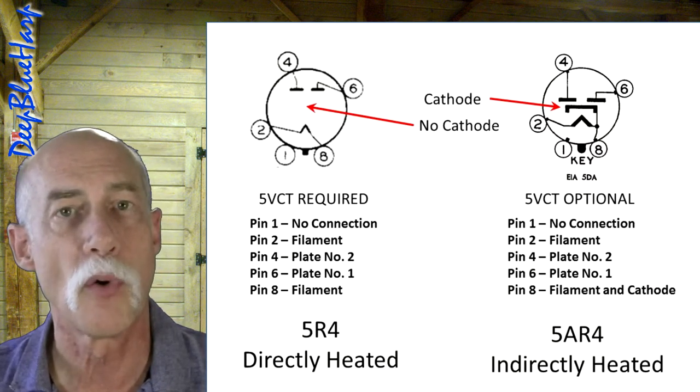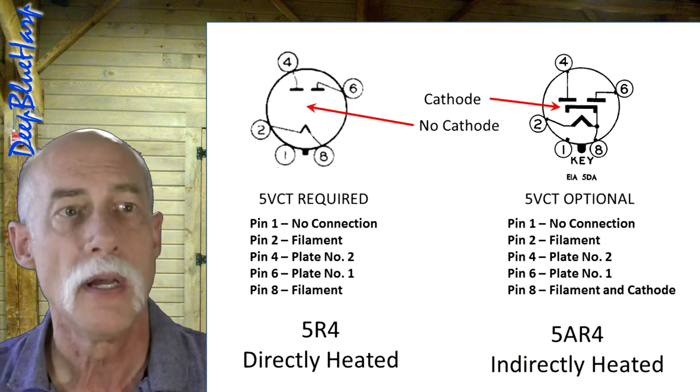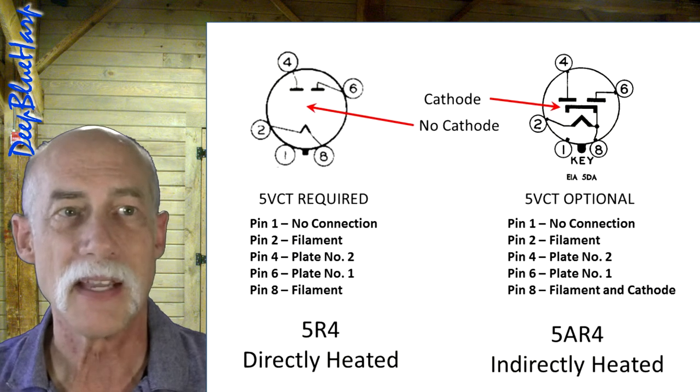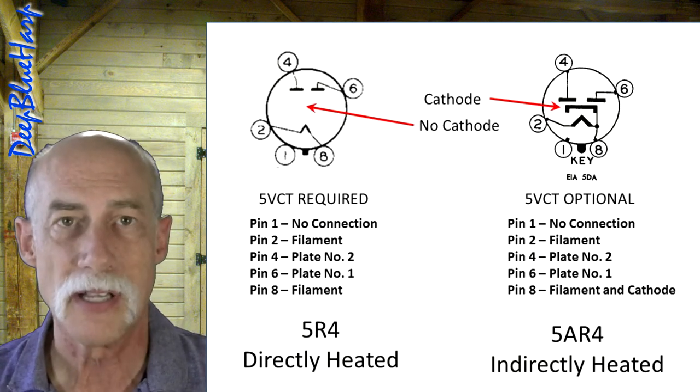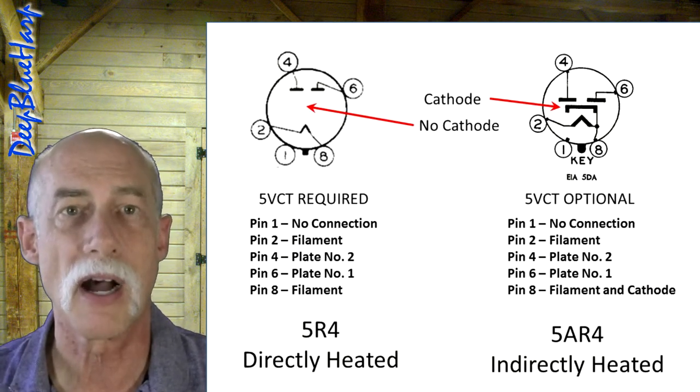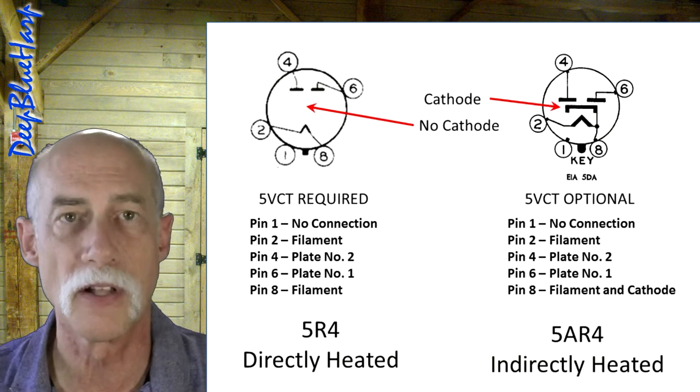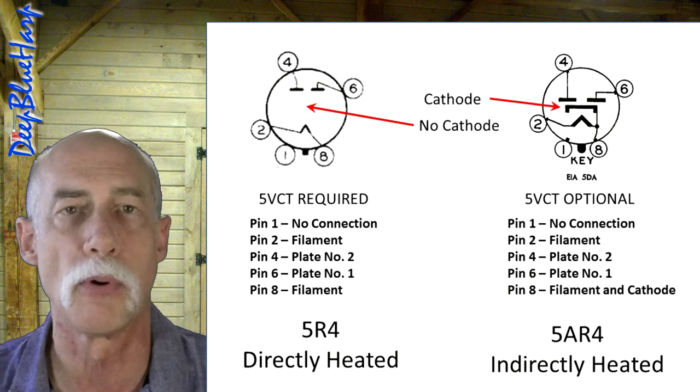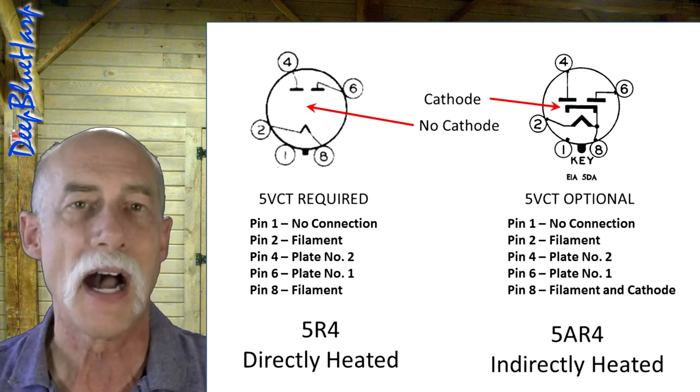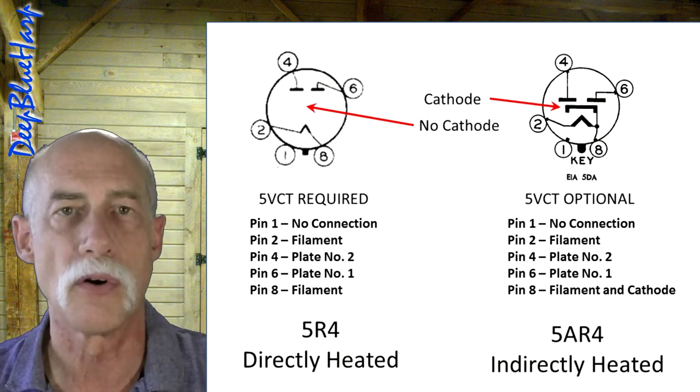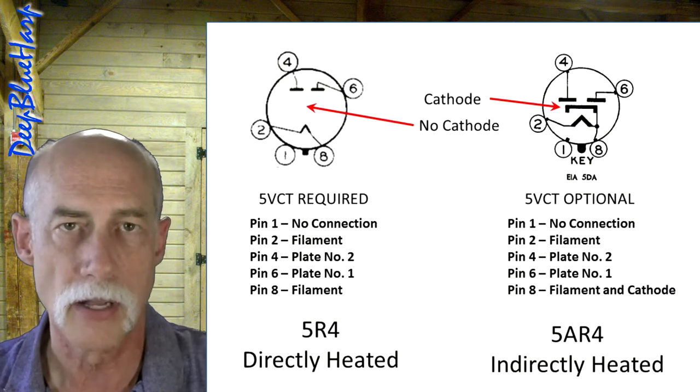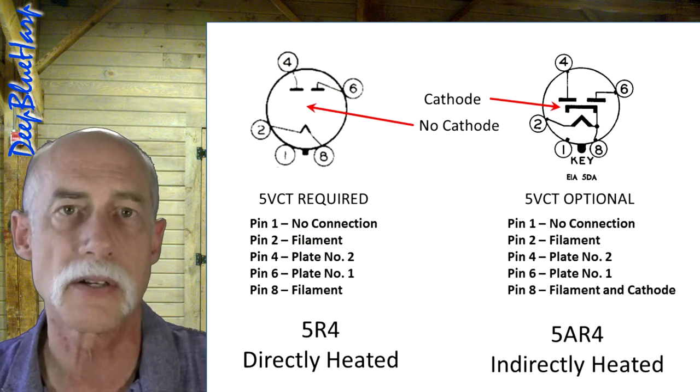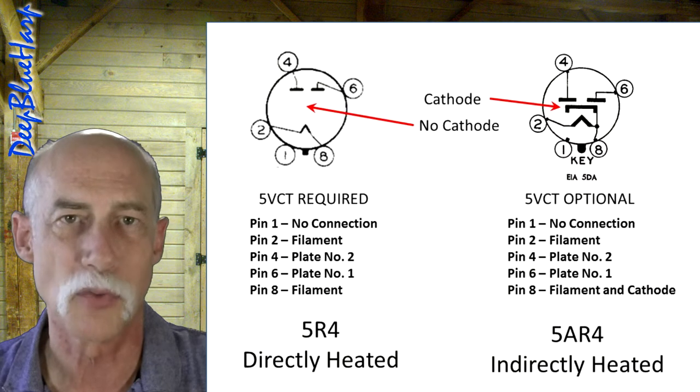On the left, the 5R4 does not have a cathode. Therefore, the plates impose and press their high voltage on the filament, and the filament then needs a center tap in order to pull off the high voltage to 350 volts off of the heater element, and that is done through the center tap of the transformer.